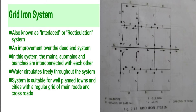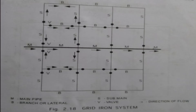This system is suitable for well-planned towns and cities with a regular grid of main roads and cross roads. In the layout of the grid-iron system, M is the main pipe, B is the branch pipe, S is the sub-main pipe, and V is the valves. The sub-main pipe, branch pipe, and main pipe are all interconnected.